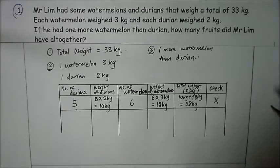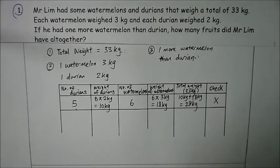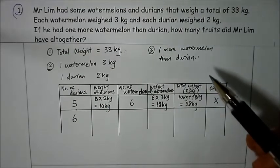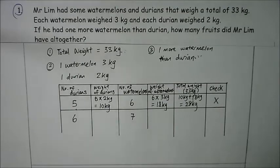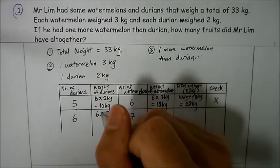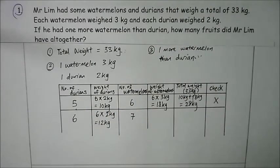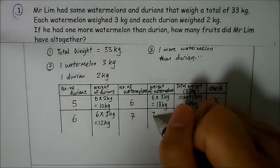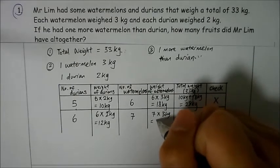We do not increase by too many because it would exceed 33 kg. Let's say we have 6 durians. Fulfilling the second criterion — one more watermelon than durian — I would have 7 watermelons. The weight of 6 durians: 6 × 2 kg = 12 kg. The weight of 7 watermelons: 7 × 3 kg = 21 kg.